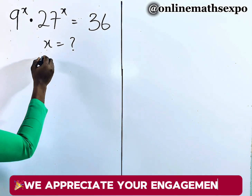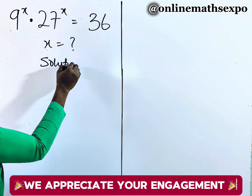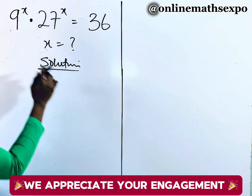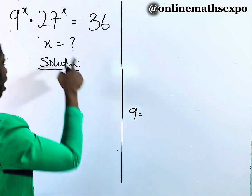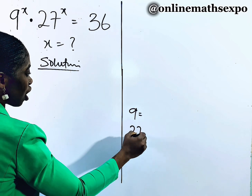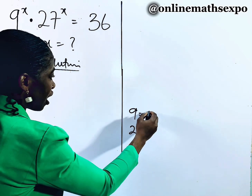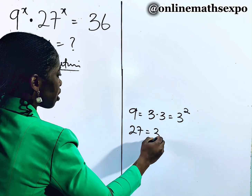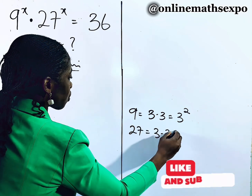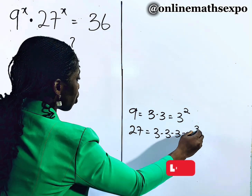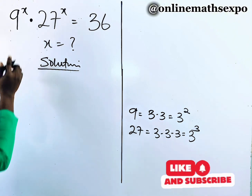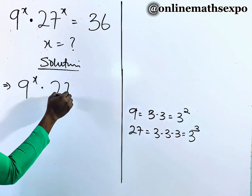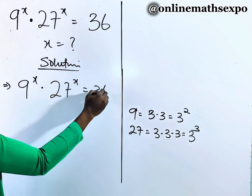We're going to begin with our solution. Now to solve this, just quickly, we know that 9 and 27 can share a common base. 9 is 3 multiplied 2 times, which is 3 squared. 27 is 3 multiplied 3 times, which is 3 cubed. Applying it here, we are going to have 9 to the power of x multiplied by 27 to the power of x equal to 36.